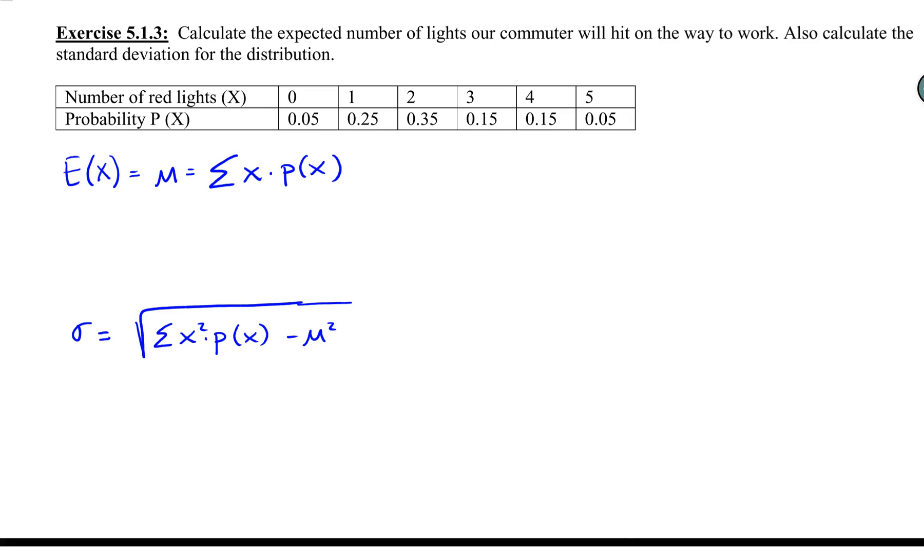This video is going to do the last example from 5.1, exercise 5.1.3. We're looking at the commuter on her way to work and the number of red lights she hits. We're going to calculate the expected number of lights she's going to hit and the standard deviation.